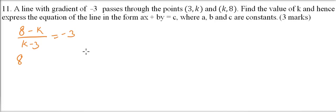When you cross multiply, you get 8 - k = -3k + 9. Bring k to the other side, so 3k becomes positive: 3k - k = 9 - 8. This gives us 2k = 1, so k = 1/2. That's the value of k.